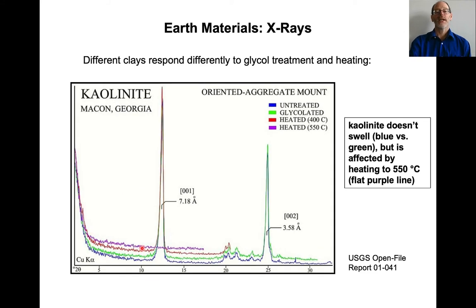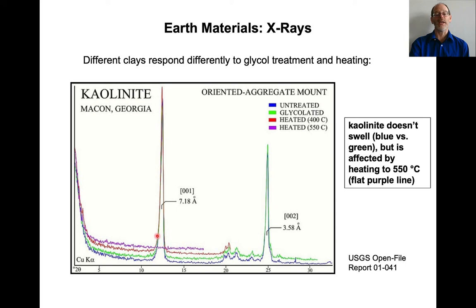Now, if you look at kaolinite — kaolinite also doesn't swell, so the peaks are not moving around in position. But it is affected by heating. Looking at the purple line heated to 550 degrees, there's no longer a peak there. So that's how you can tell that a particular peak would correspond with kaolinite.